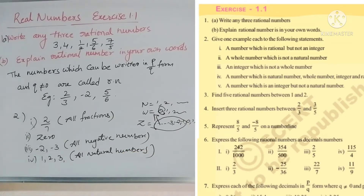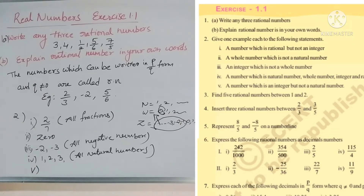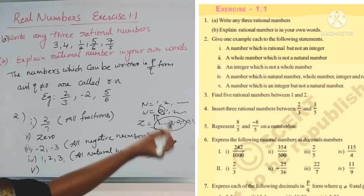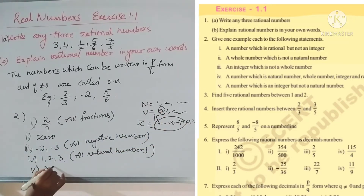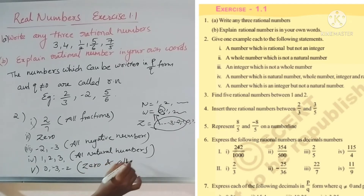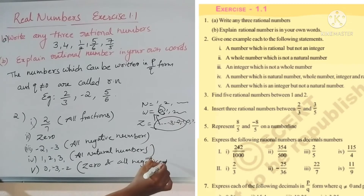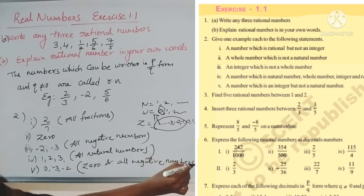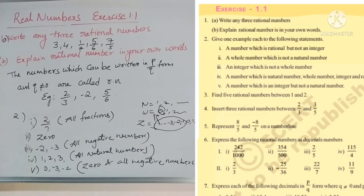Fifth statement: a number which is an integer but not a natural number. Integers include zero and negative numbers which are not natural numbers. So the answer is zero and all negative numbers, like minus three, minus two. So with these points about natural numbers, whole numbers, integers, and rational numbers in mind, you can easily write answers for these problems.